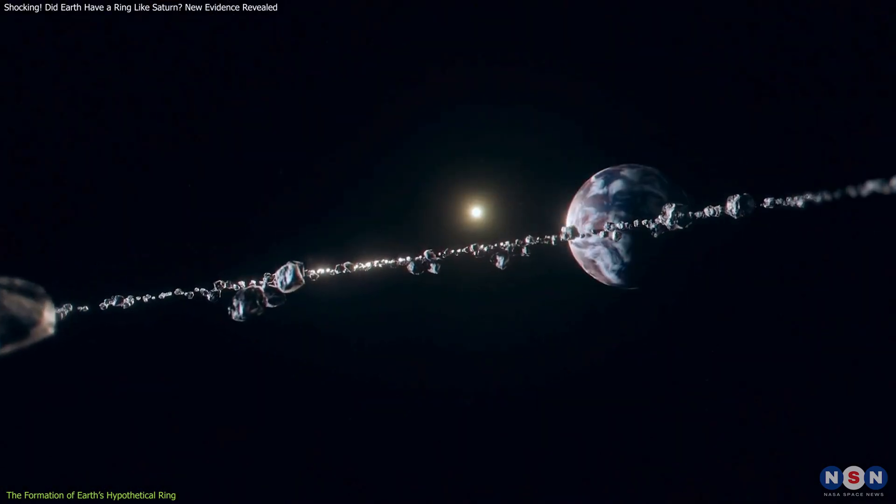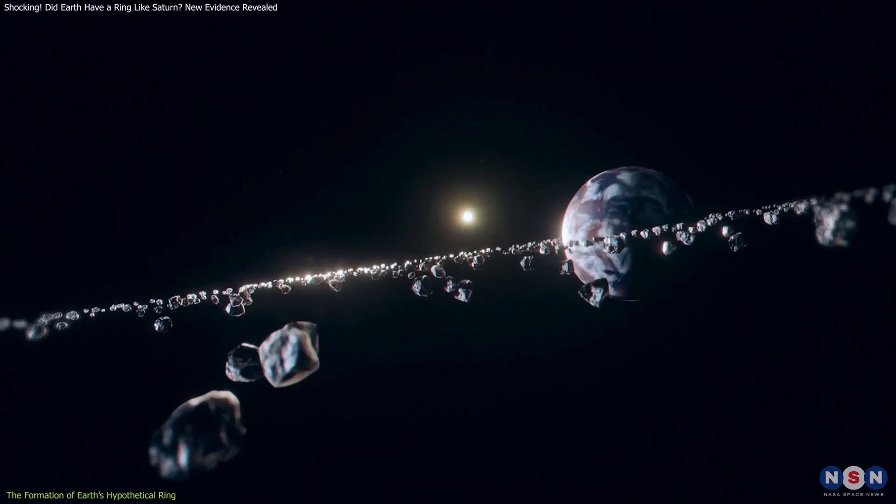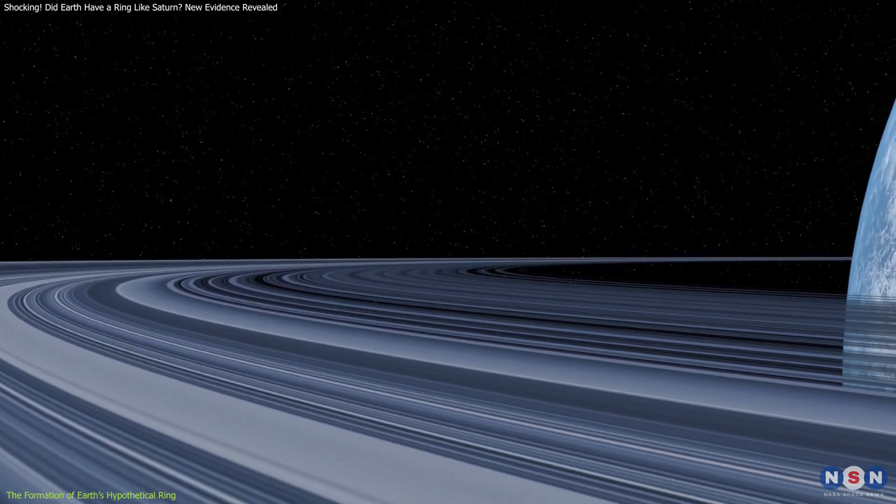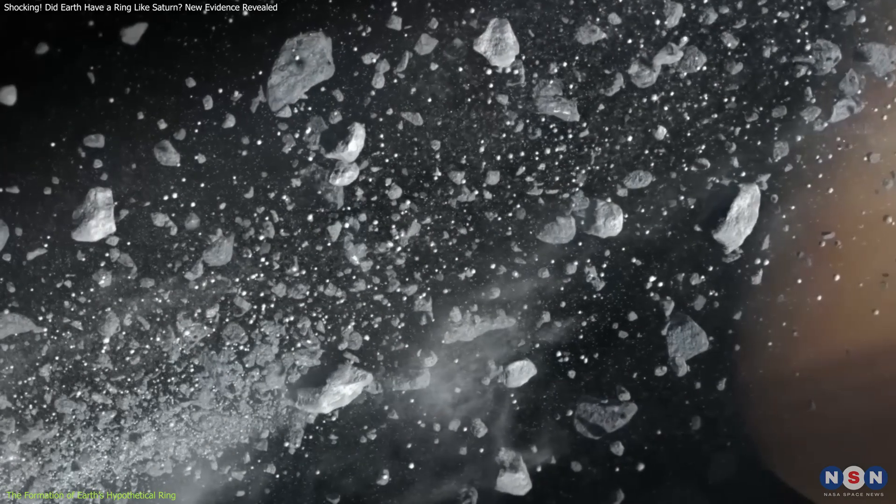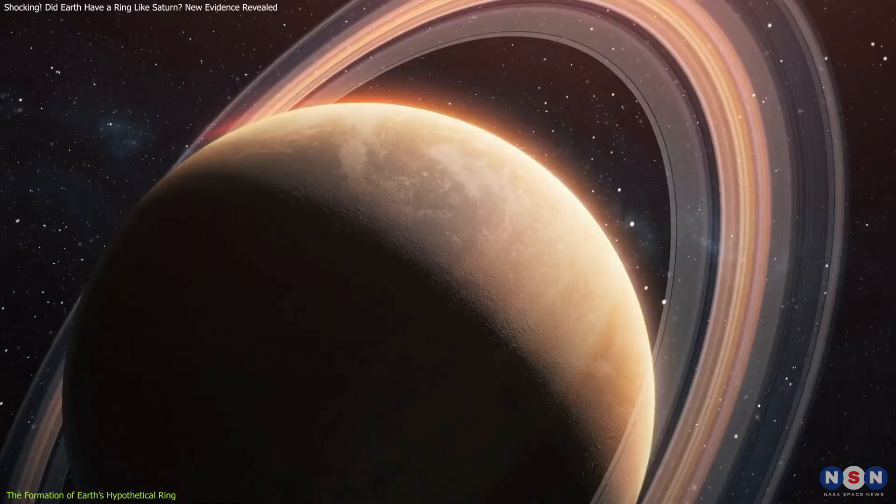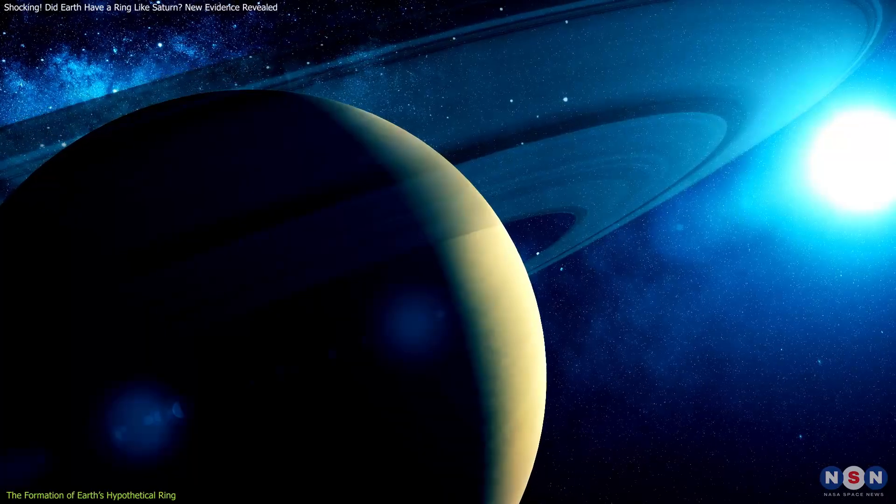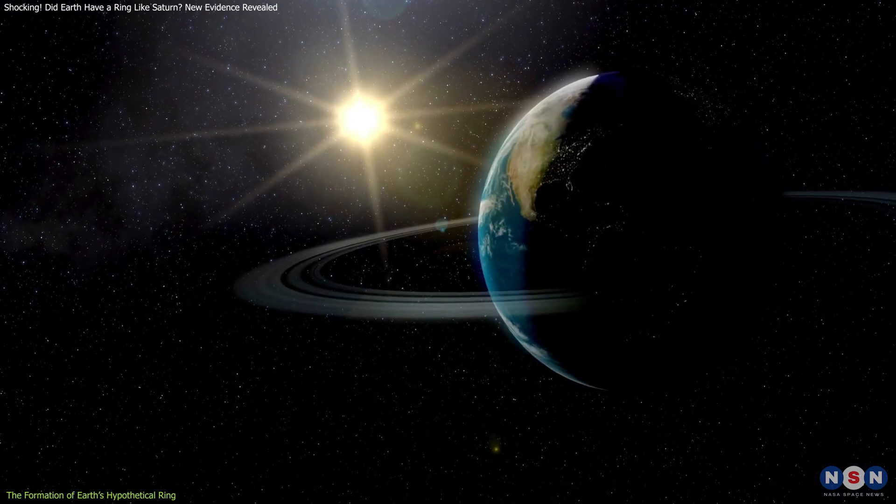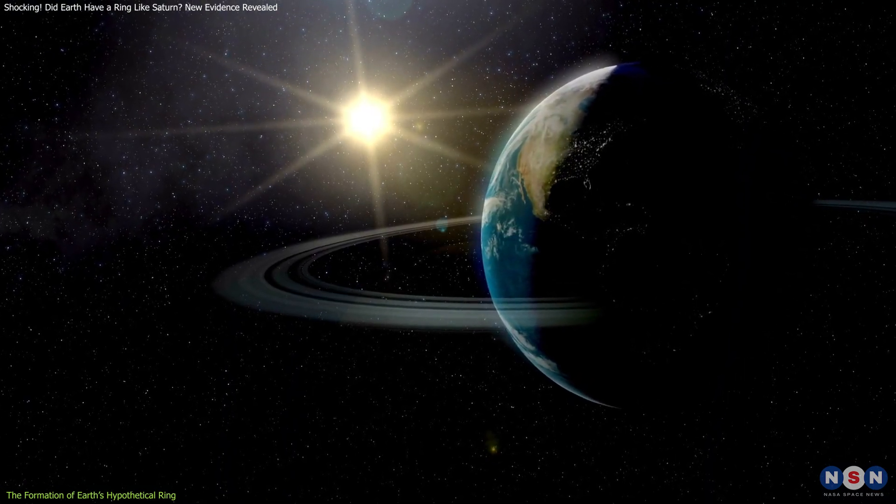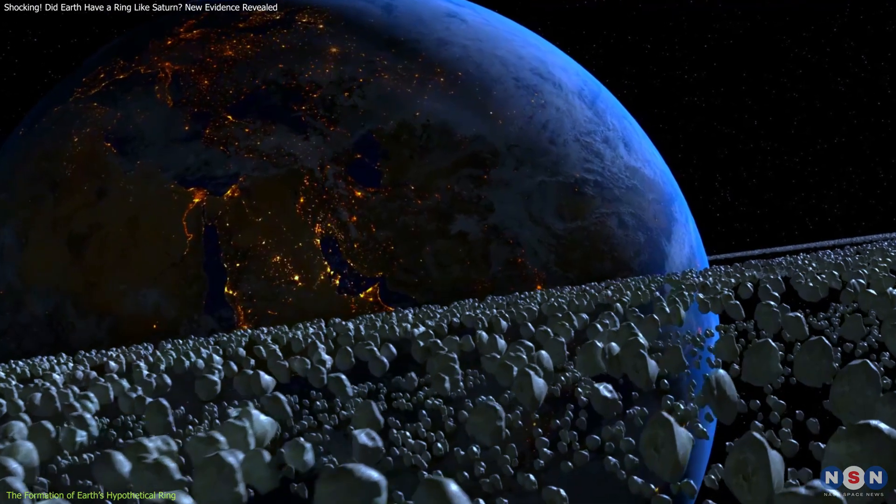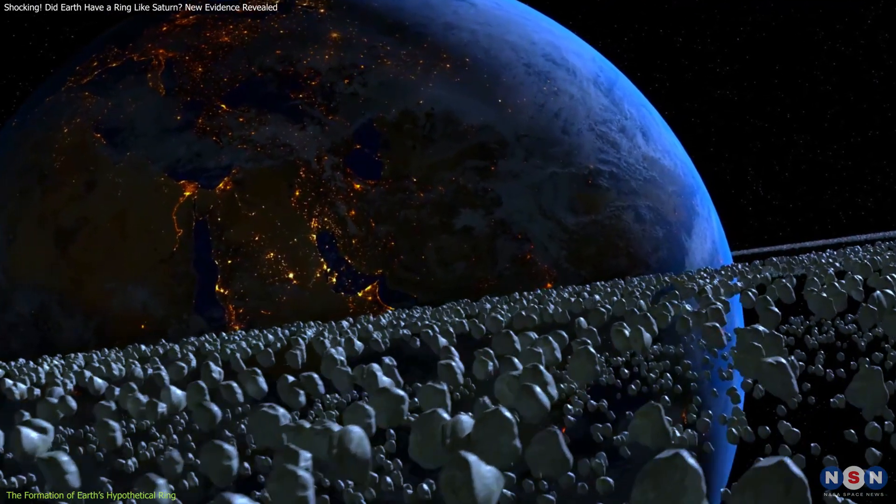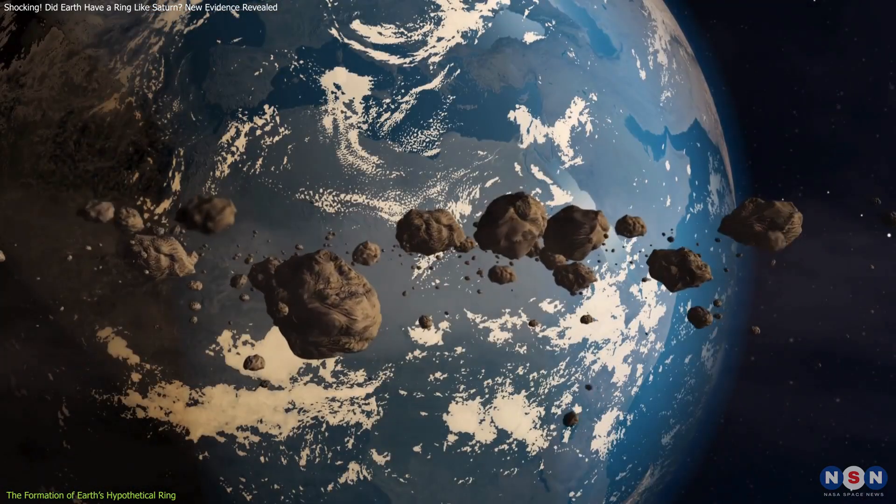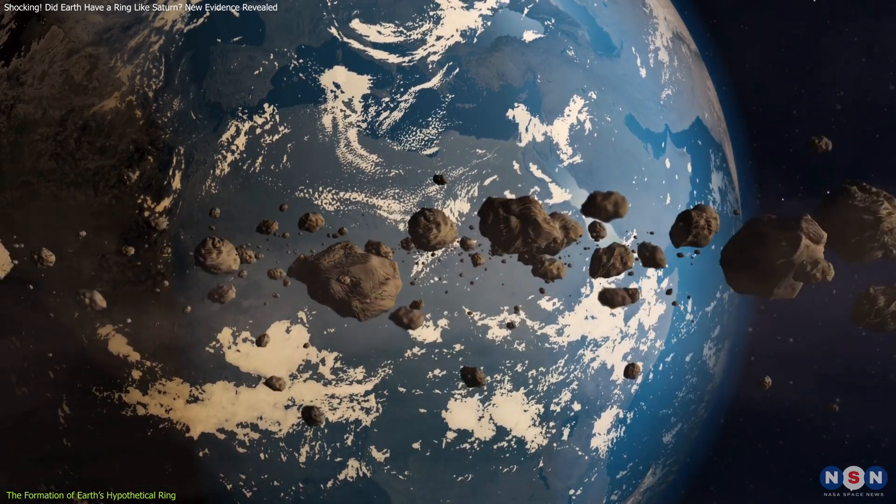This ring would have been composed of various sizes of rock and dust, gradually spreading into a more diffuse band of material. Similar processes are thought to have created the rings around Saturn, Jupiter, Uranus, and Neptune. But such a ring around Earth would be temporary due to our planet's relatively stronger gravity. Still, the debris could have orbited Earth for millions of years before being pulled down by Earth's gravity or colliding with the planet, creating impact craters.